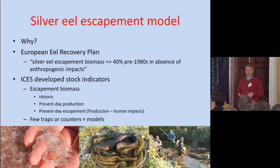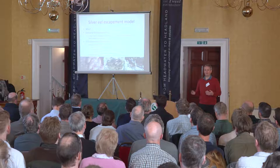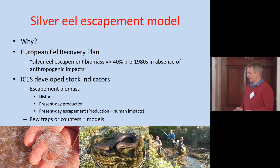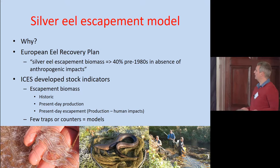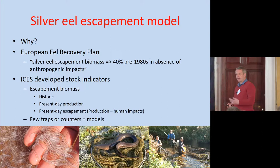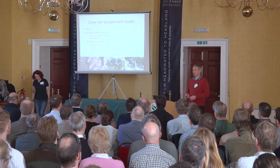Now the reason for this talk: my world is the eel world, and has been for the last 10 years. We have a silver eel escapement model, and I thought, well, I wonder if that would fit for doing smolts. So why do we have a silver eel escapement model? We've got a European regulation, and it says we've got to work out how many eels we've got now, and how many we should have had compared to prior to the 1980s. Because if you think it's hard to catch a smolt, it's even harder to catch a silver eel. We've got to do this on models, and we have stock indicators based on escapement biomass — for historic levels, for present day production, and also when you take into account human impacts for present day escapement. We've got few traps or counters, so we're reliant on models.